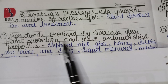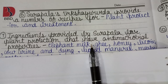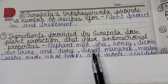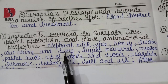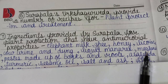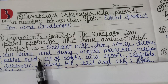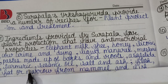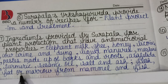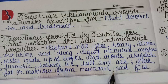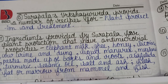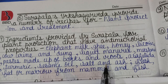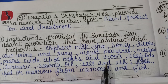Ingredients provided by Surpala for plant protection with antimicrobial properties include: elephant milk, ghee, honey, licorice, cow urine and dung, liquid manures, mustard, paste made of barks and roots, asafoetida, turmeric, sesame oil, salt and ash, and flesh, fat or marrow from mammals and fish.